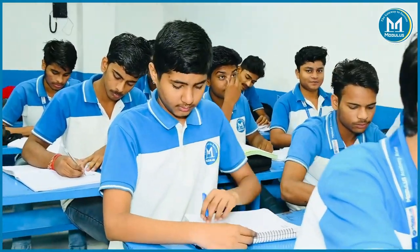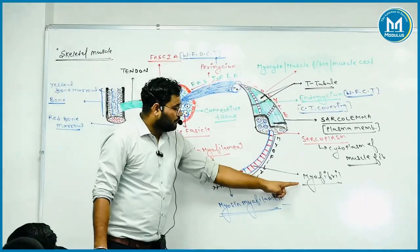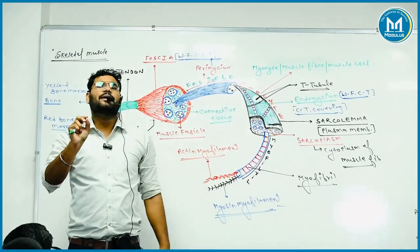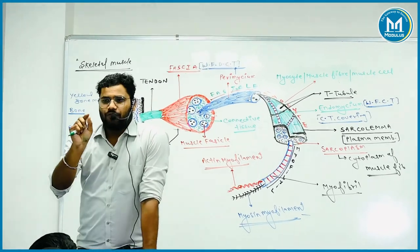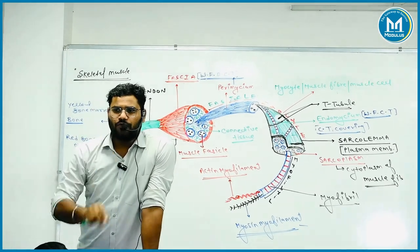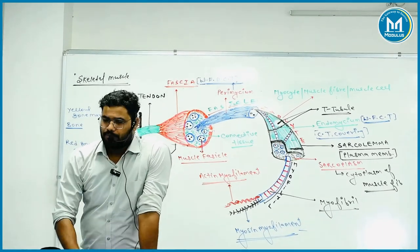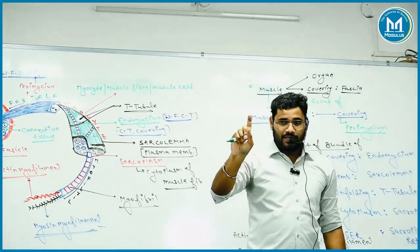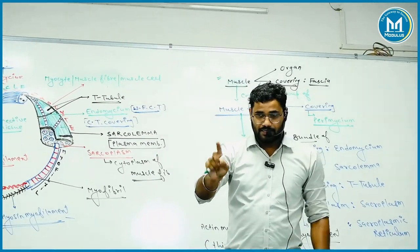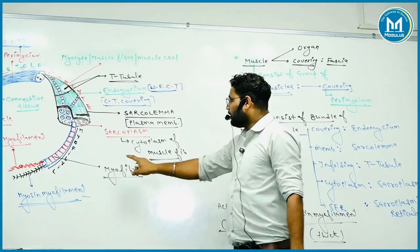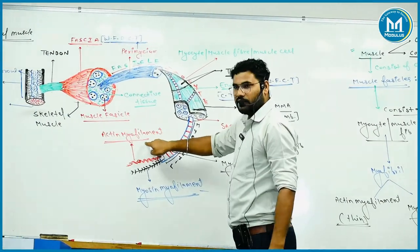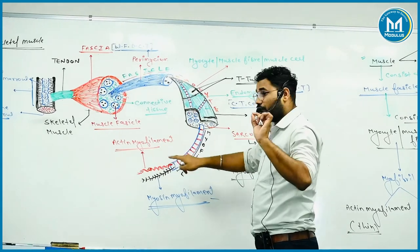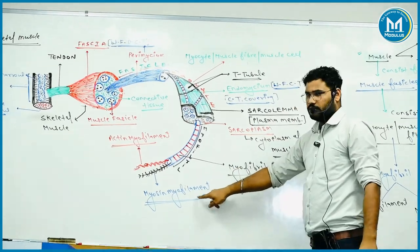In one muscle fiber, there are many myofibrils. These myofibrils are made of two types of myofilaments. When we talk about these two myofilaments: we have a thin myofilament, known as the actin myofilament, and a thick myofilament, known as the myosin myofilament.